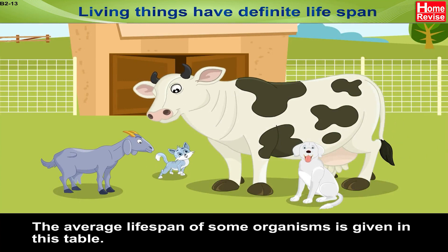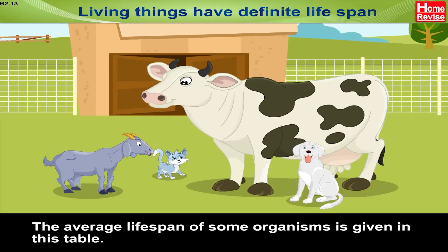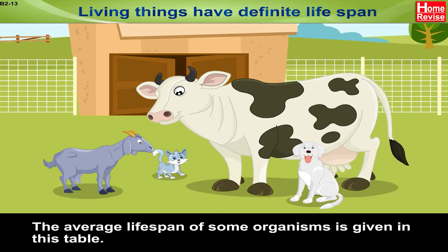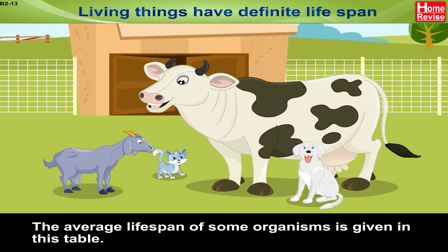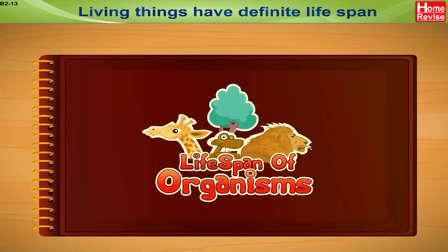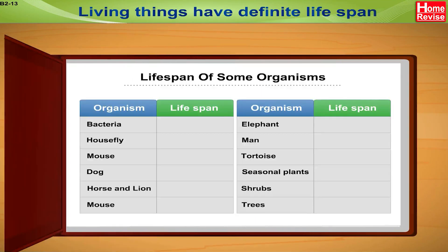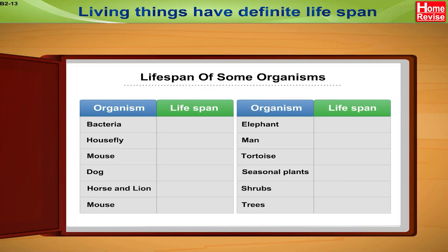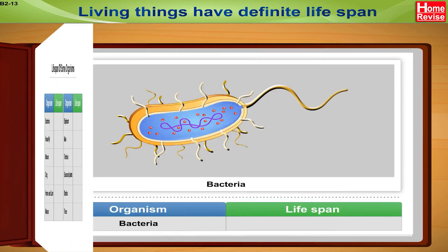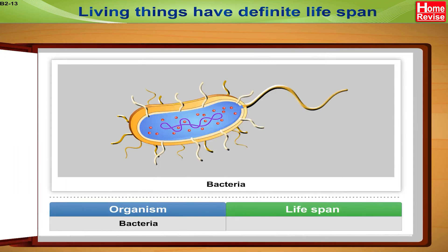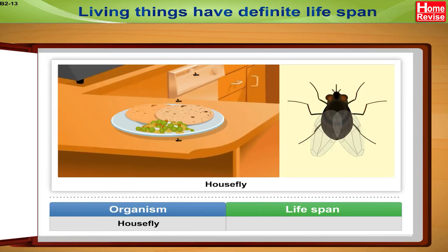The average life span of some organisms is given in this table. The life span of bacteria is twenty to thirty minutes; that of a housefly is one to four months.